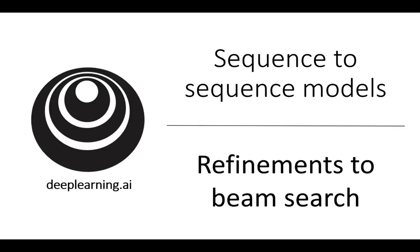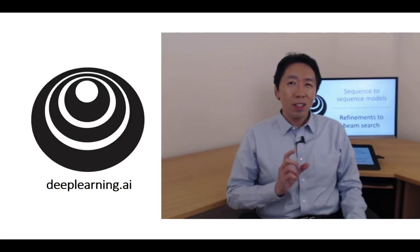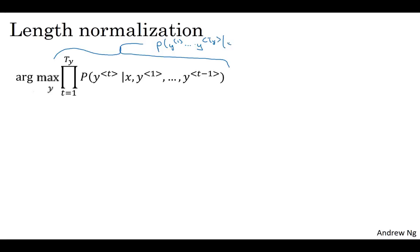In the last video you saw the basic beam search algorithm. In this video you learned some changes that make it work even better. Length normalization is a small change to the beam search algorithm that can help you get much better results. Here's what it is. We talked about beam search as maximizing this probability, and this product here expresses the observation that p of y1 up to yTy given x can be expressed as p of y1 given x times p of y2 given x and y1, dot dot dot, up to p of yTy given x and y1 up to yTy minus 1.